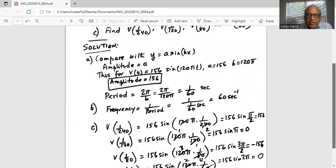Now we find the value of the voltage at the given time. So first is 1 over 240. So it is 156 sine 120 pi multiplied by 1 over 240 for t. 120 goes into 240 twice. So it is 156 sine pi over 2, which is 156 volts.